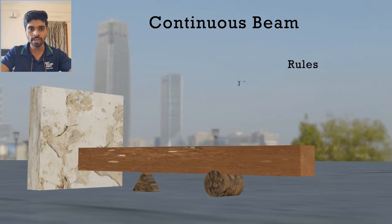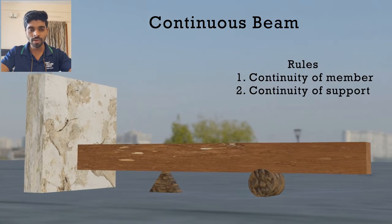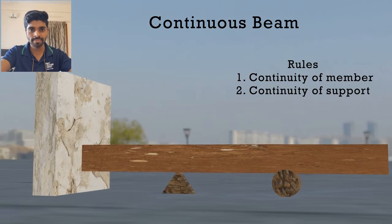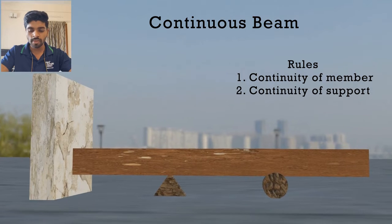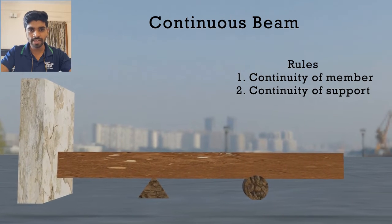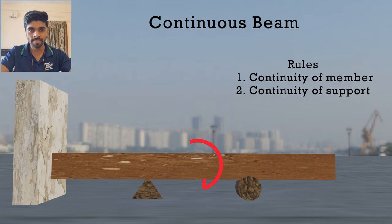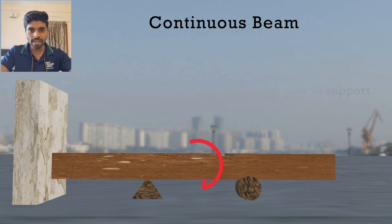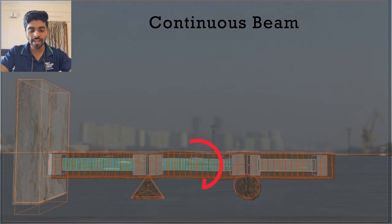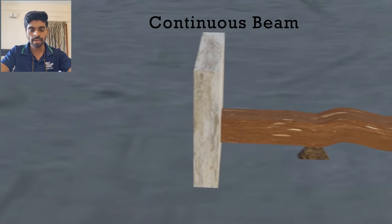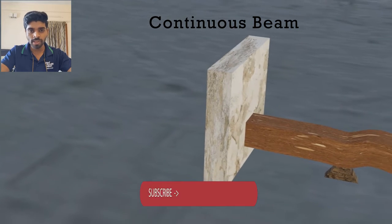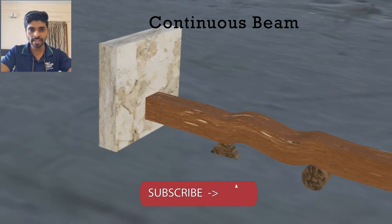Here we are going to use the rule of continuity of member and rule of continuity of support. We will start making the deflected shape from the point where the moment is acting. We will see that on the right side of the moment the beam will get sag a little bit, and on the left part of the moment the beam will get hog. So its deflected shape will be like this.